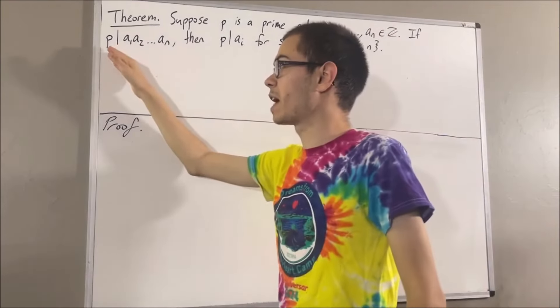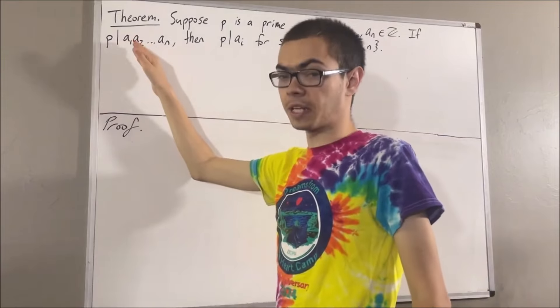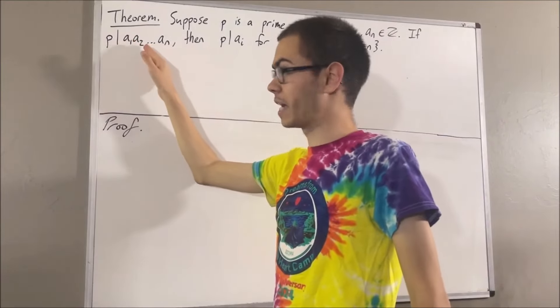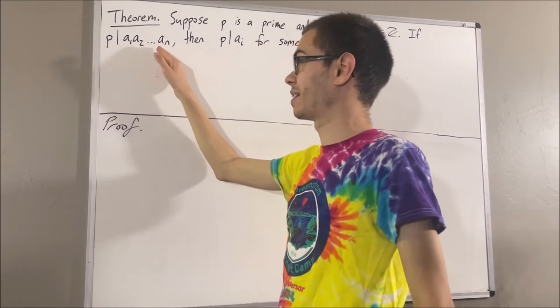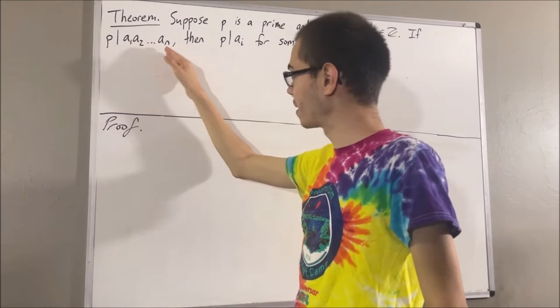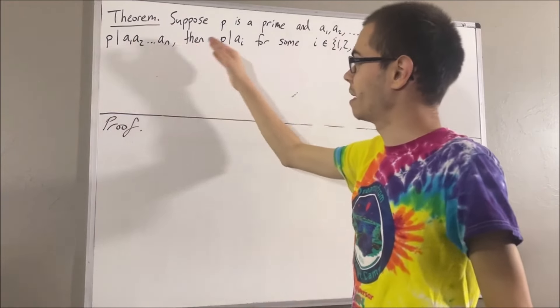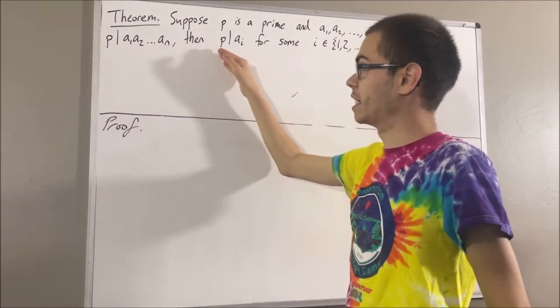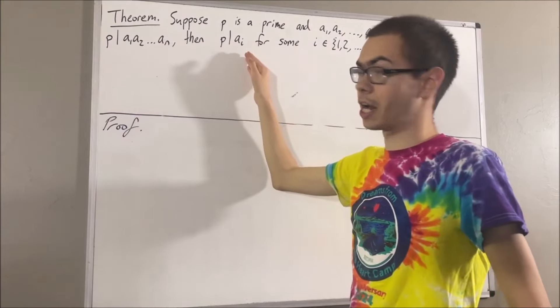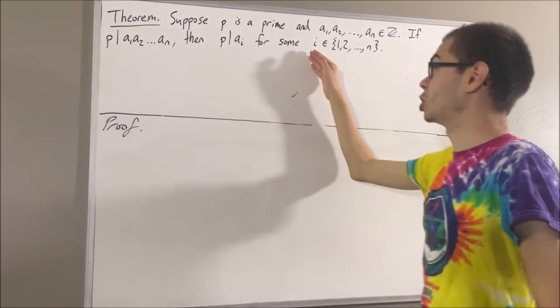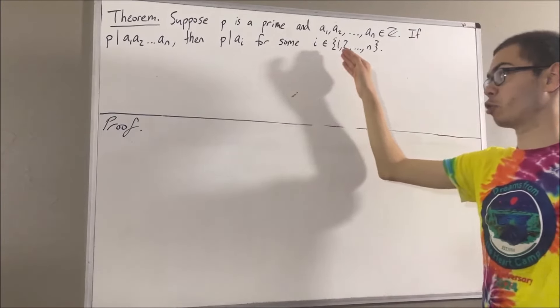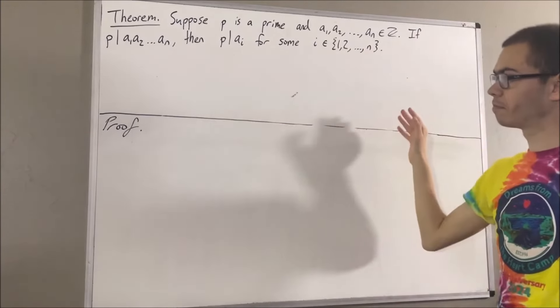If p is a divisor of the product a1 times a2 times ... times an, then p is a divisor of ai for some integer i between 1 and n.